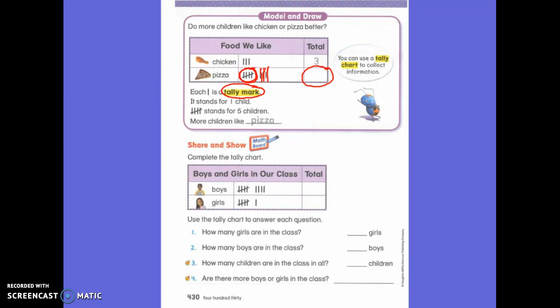So it's each tally mark is one tally mark. It stands for one child. And this stands for how many? Five. More children like pizza. We can tell because this is only three. But this is five, which is already bigger than three. But then we have three more here. So I know that this is eight. Which one is bigger? Three or eight? Eight. So more children chose pizza.